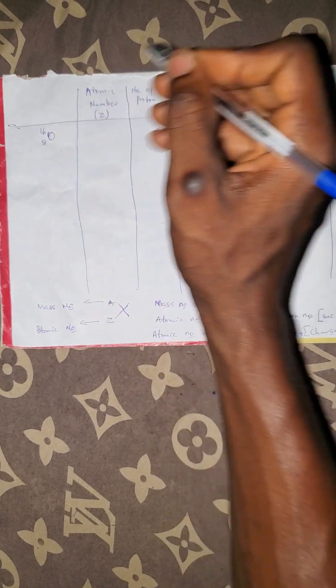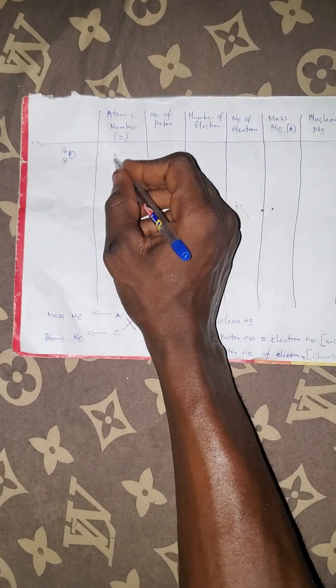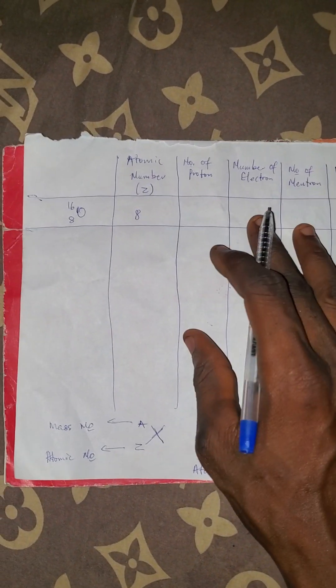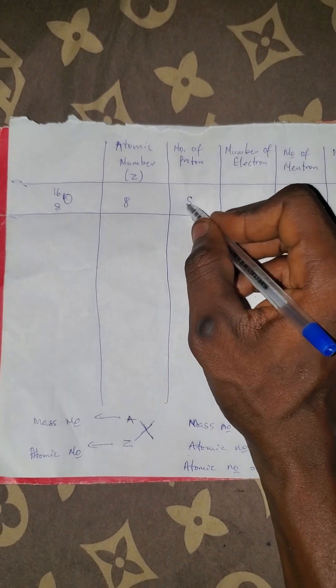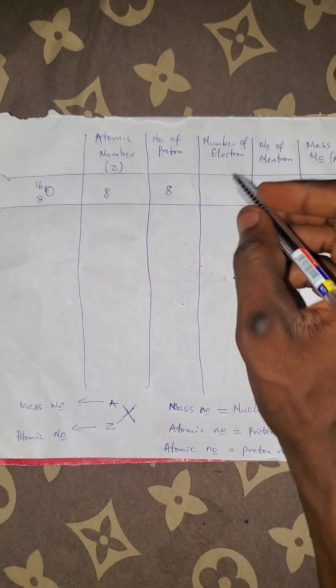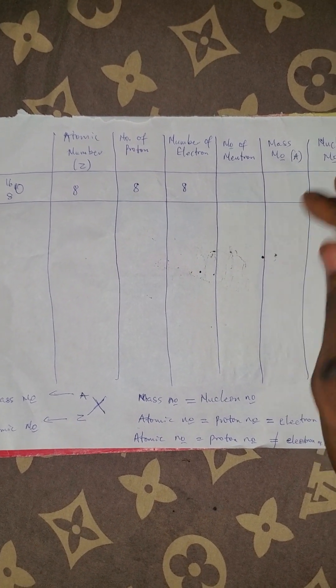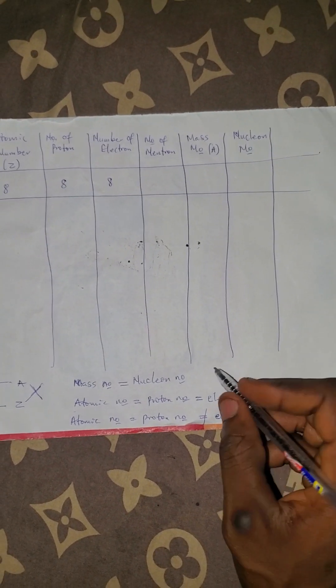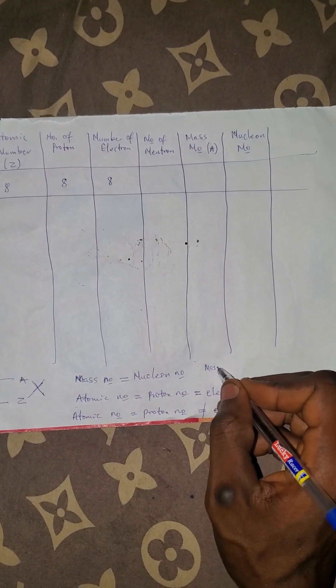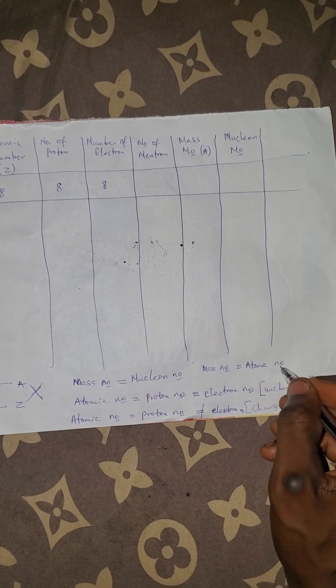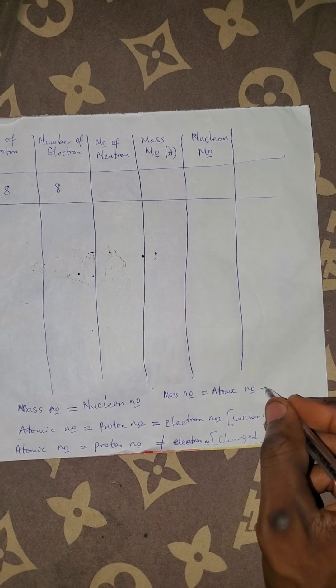Let us examine oxygen: O-16, written as 8 over 16. The atomic number here is 8. The proton number is also 8 because they are the same. The electron number will also be 8 because it doesn't have a charge. For the neutron number, note that mass number equals atomic number plus neutron number.